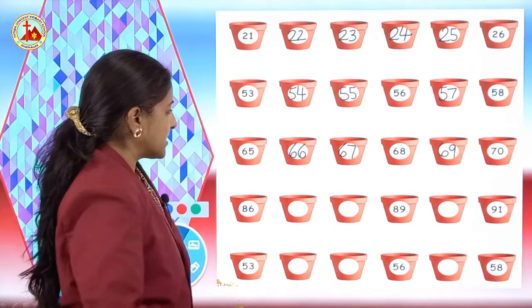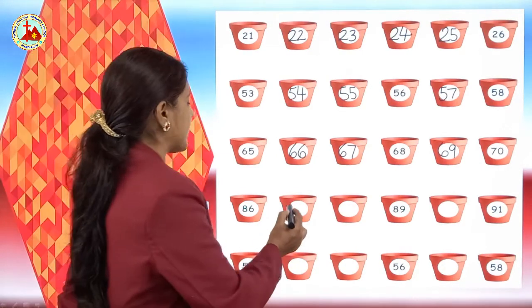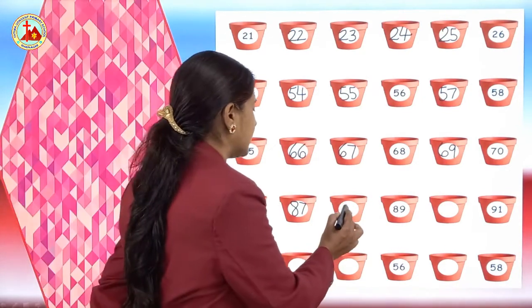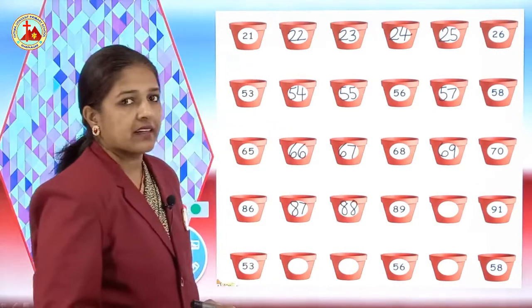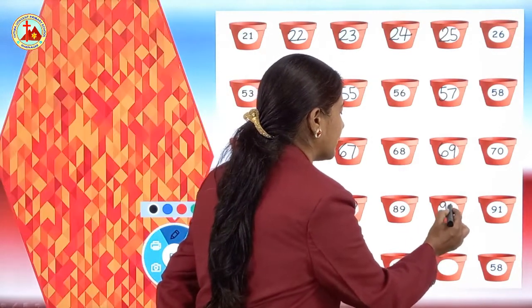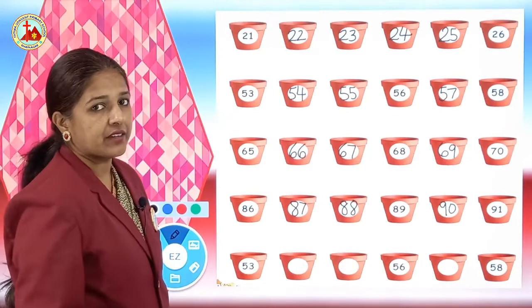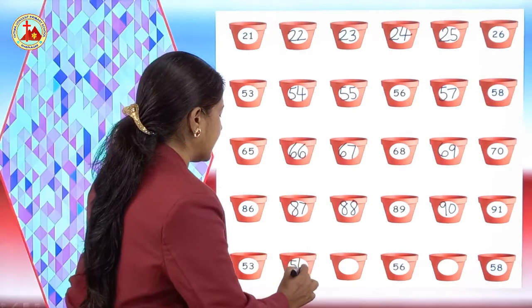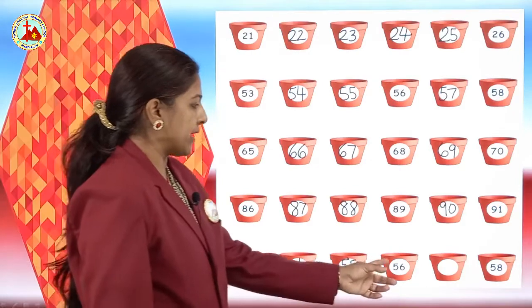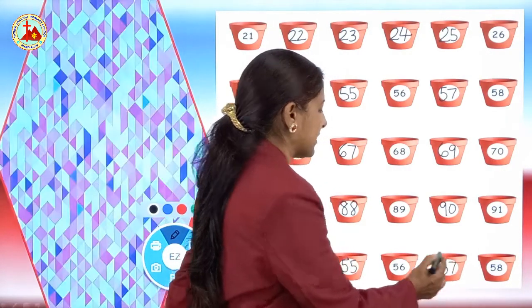Next is 86. After 86, which number? 87. So here 87. After 87, 88. Then the next number written is 89. After 89, 90. 91 is written. On the next line, 53, 54. After 54, 55. After 55, 56. Then after 56, 57.